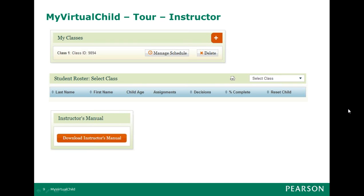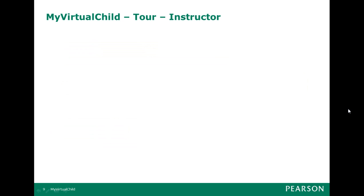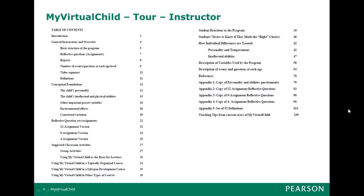There's also a really good instructor's manual that goes with this. It is a system that requires a bit of thought on how to integrate it within your class. The table of contents includes general instructions and overview, foundations of intellectual and physical attributes, reflective questions and assignments, suggested classroom activities, group activities, and how to use My Virtual Child as a basis for lectures. There are also student reactions to the program, and teaching tips from current users of My Virtual Child. So there's a lot of detail there if you want to delve into it.